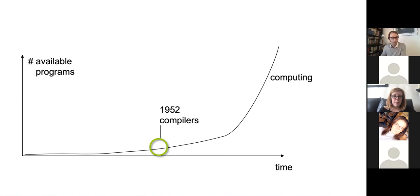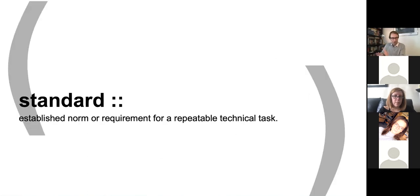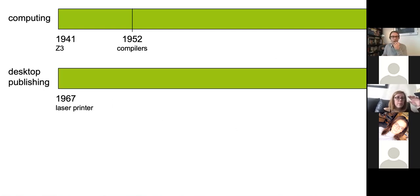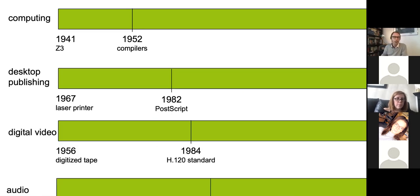I would be very curious to see what that means in the context of digital fabrication. In computing, portability is the ability of software to be transferred from one machine or system to another, and we typically capture that in the form of standards. A standard is an established normal requirement of a repeatable technical task. If you look at the history of computing, compilers were the moment where software remained relevant. We've seen the exact same thing happen in desktop publishing, where Adobe came with PostScript and PDF standards — and similarly with digital video and digital audio.